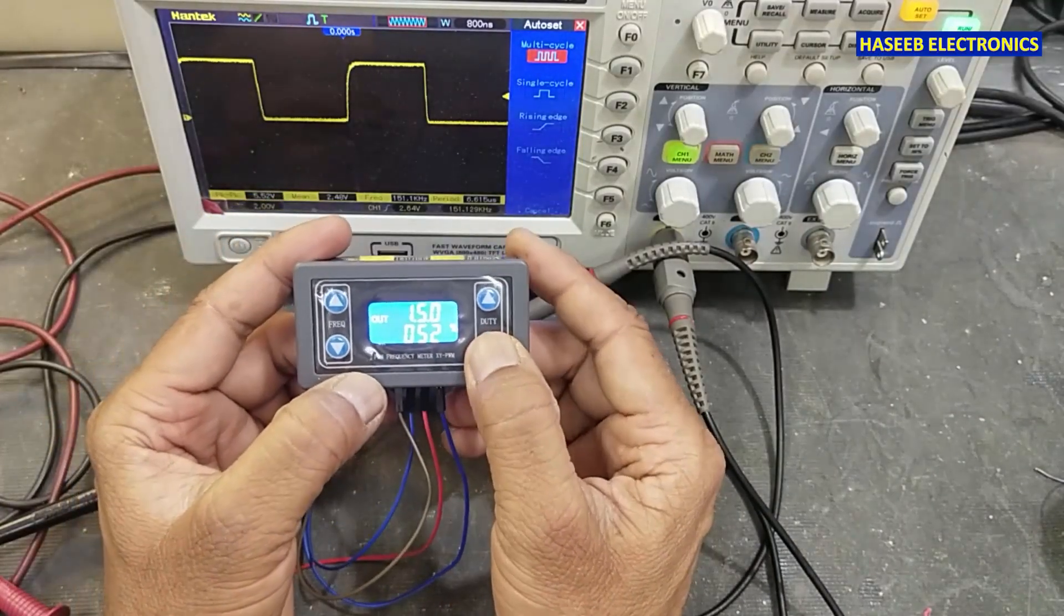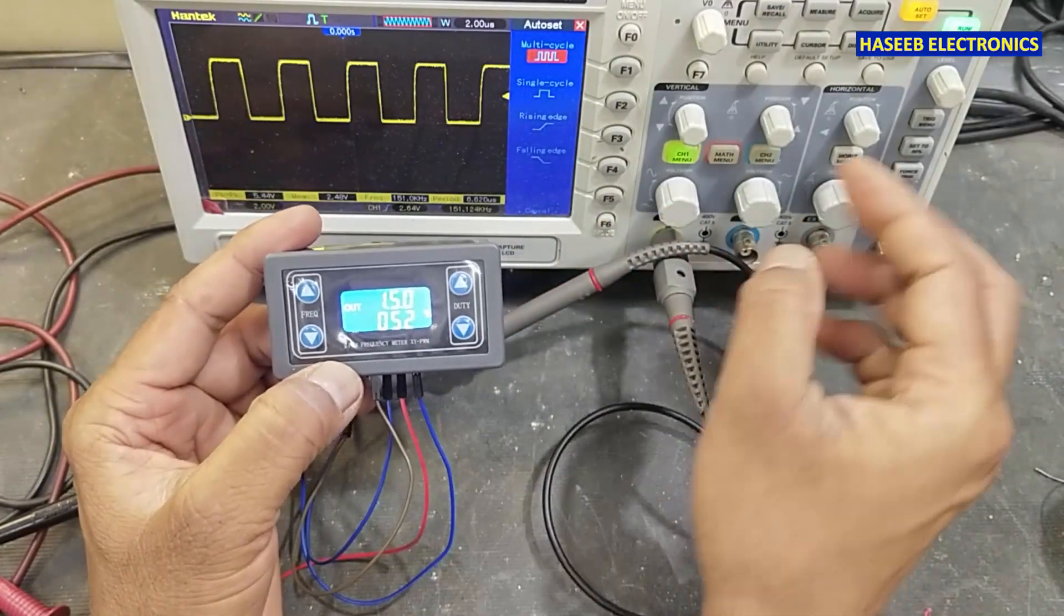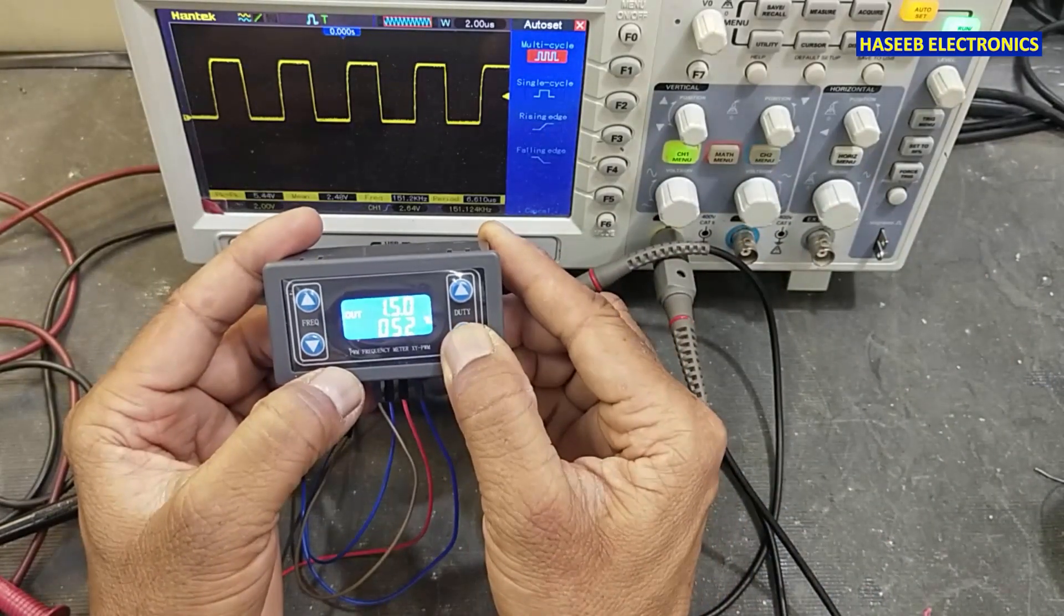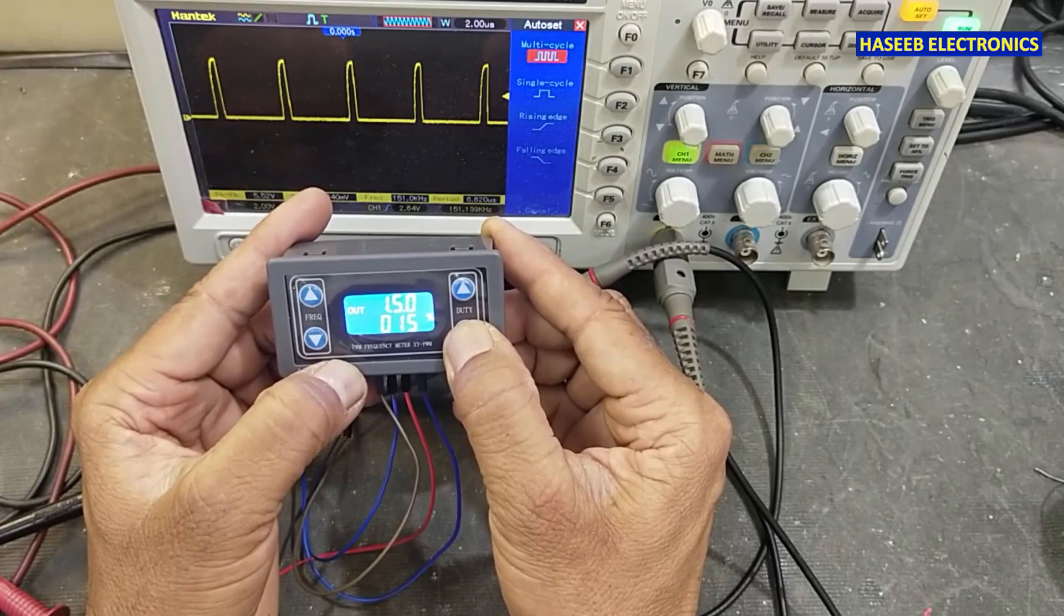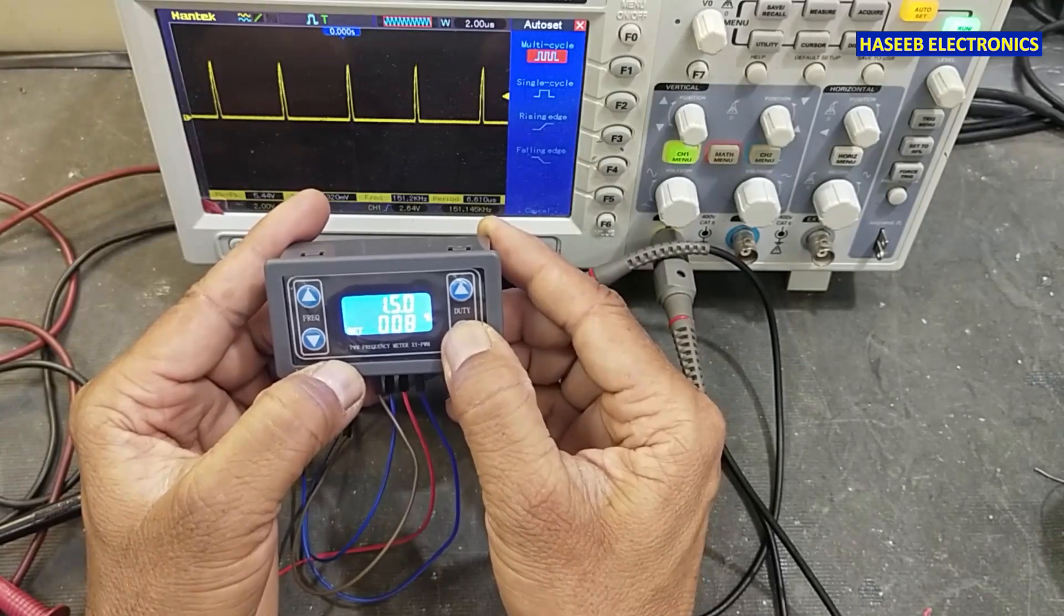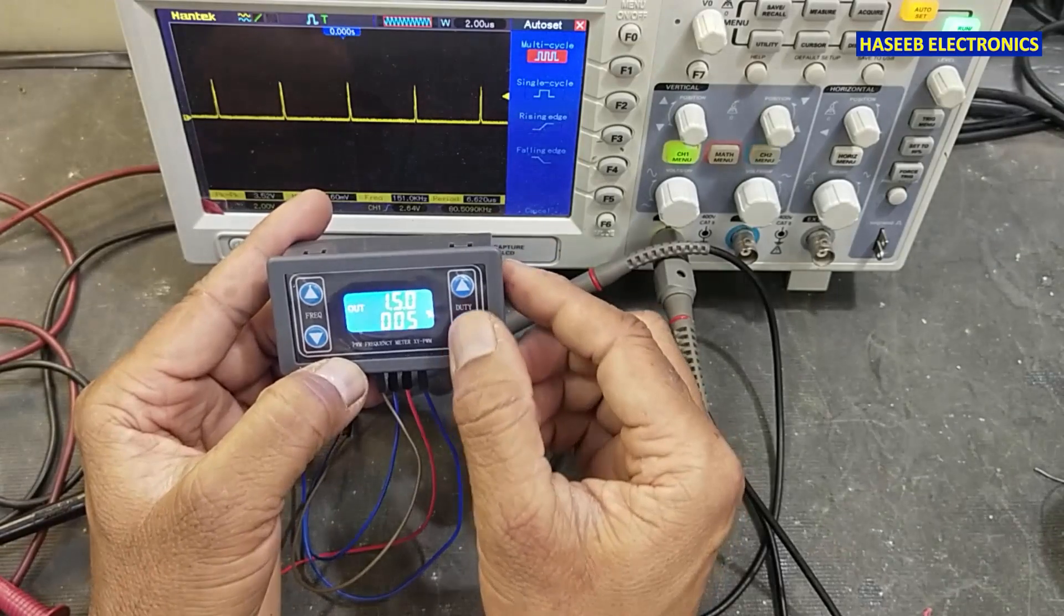Now if I decrease the duty cycle at 150 kHz, you can see it is decreasing by 1 kHz. 80%, 10%, 7%. That's nice.